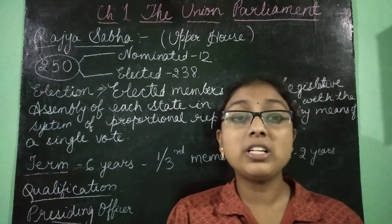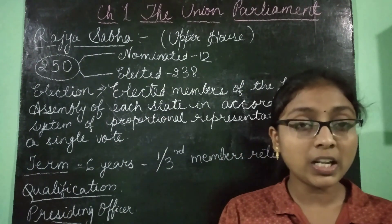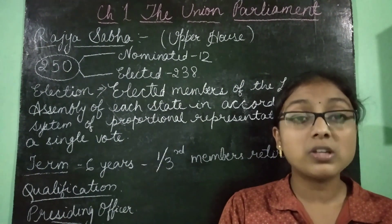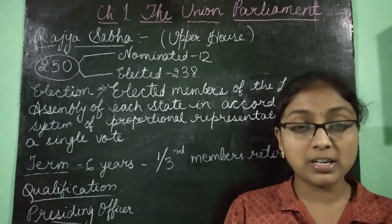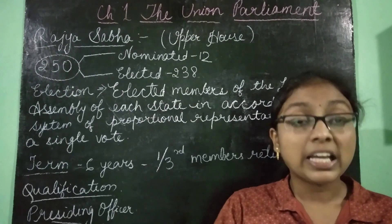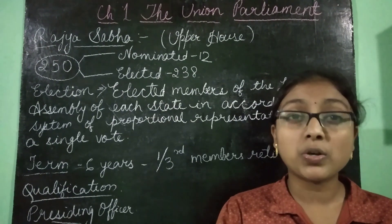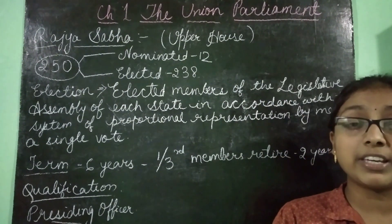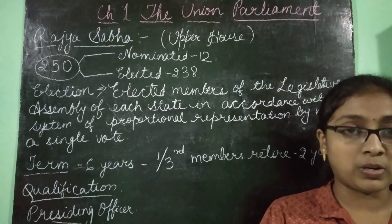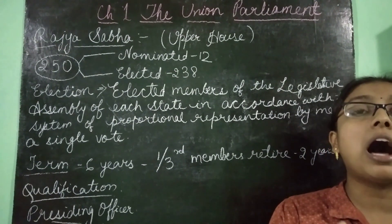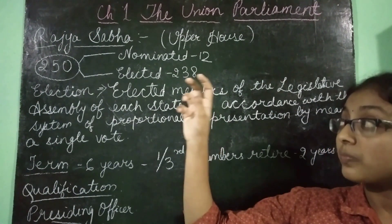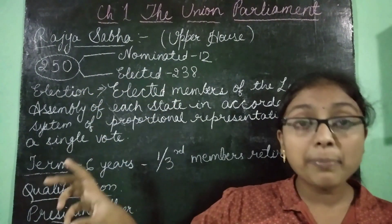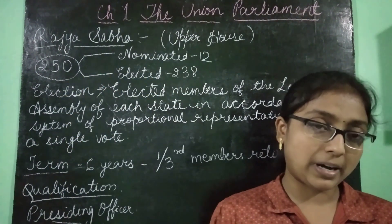Why is this special privilege given to them? Why does the President of India nominate them? Because these 12 nominated members have excelled in the fields of science, education, social service, art, etc. Such people are nominated by the President and become members of Rajya Sabha.